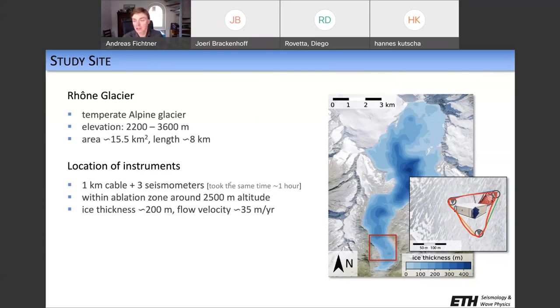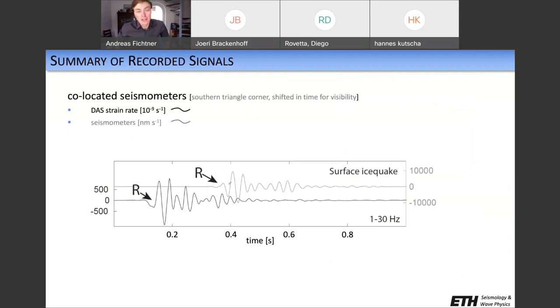What we did is we deployed a one kilometer long cable in the lower part of the glacier. So it was deployed in this triangular shape that you see to the right. And in each corner of the triangle, we also deployed a standard geophone. So this is all at about 2,500 meter altitude. And the important thing here to note is that the deployment of the cable and the deployment of the three seismometers took about the same time, namely about one hour. So this means that in one hour, we had three seismometers and 1,000 DAS channels. A few examples of the signals that we recorded. What is shown in the following pictures are always two traces. They are shifted in time to make them better visible. It's not because they were actually shifted.